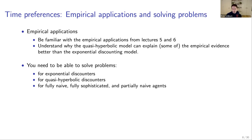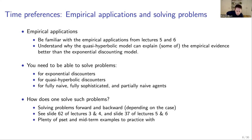You need to be able to solve problems — similar to those in the problem sets — where people are either exponential discounters (beta equals 1) or quasi-hyperbolic discounters with beta less than 1 and delta around 0.95. You should use backwards or forwards induction as discussed in slide 62 of lectures 3 and 4 and slide 37 of lectures 5 and 6. Recitation also covers this in detail.